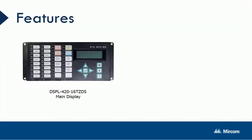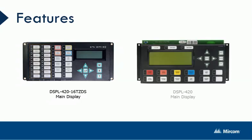The DSPL-420-16-TZDS comes equipped with a 4x20 LCD display with an additional 16 LED zones for enunciation, while still maintaining the same footprint as our standard DSPL-420 main display.